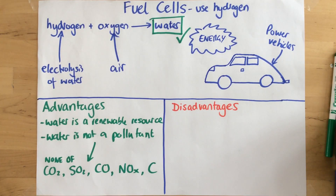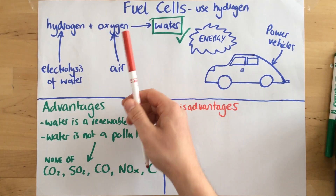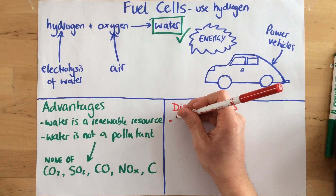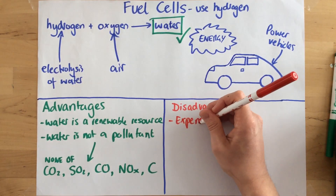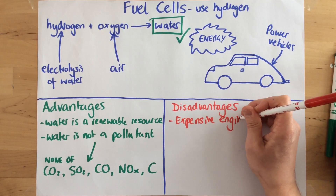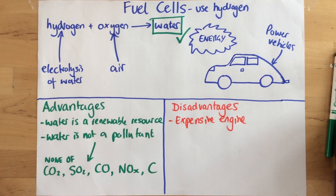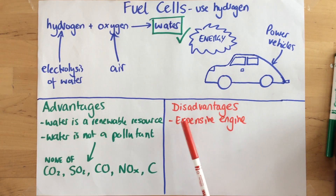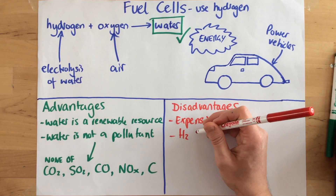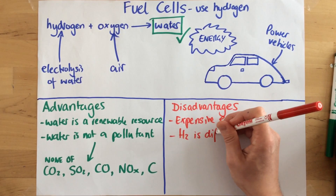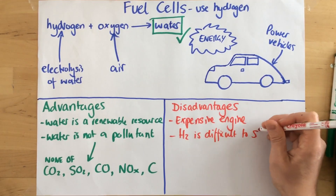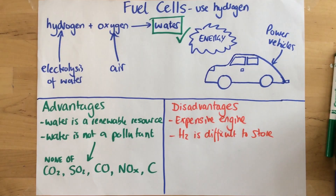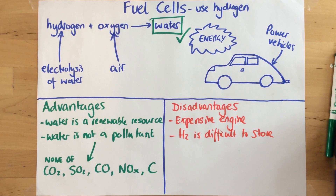We also need to learn about the disadvantages, because fuel cells are far from perfect. The first disadvantage is that we need a special and expensive engine. Current technology means we can't mass produce fuel cells cheaply, so they still have very expensive engines. Also, hydrogen is difficult to store. The reason for this is it's a gas at room temperature, so it takes up a very large volume compared to petrol or diesel, giving us storage difficulties.